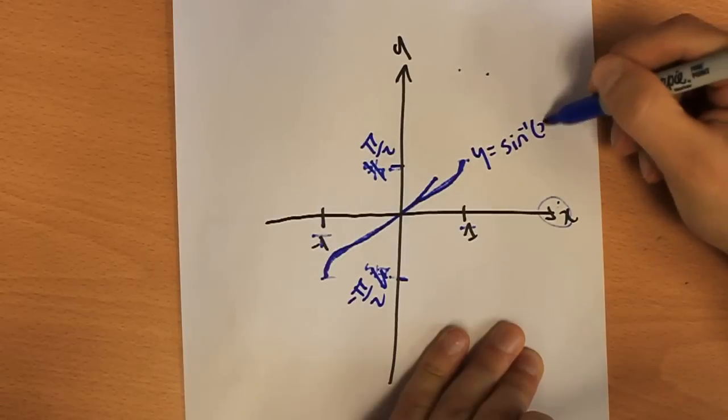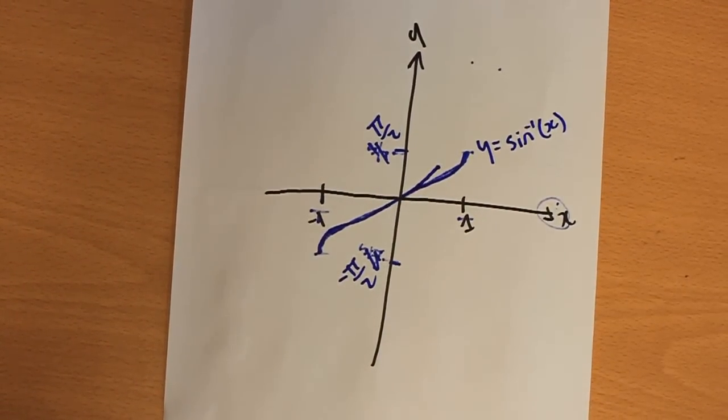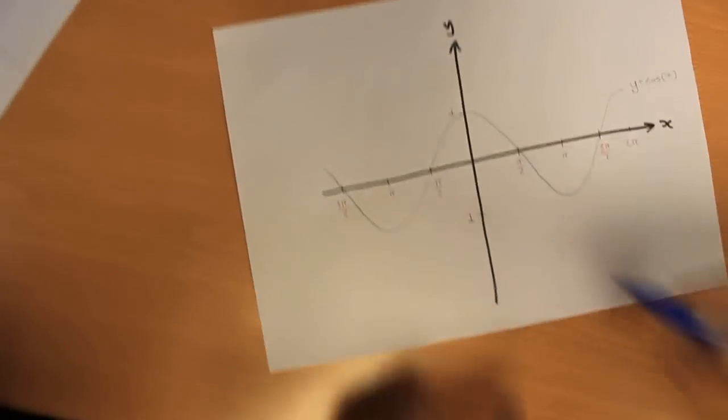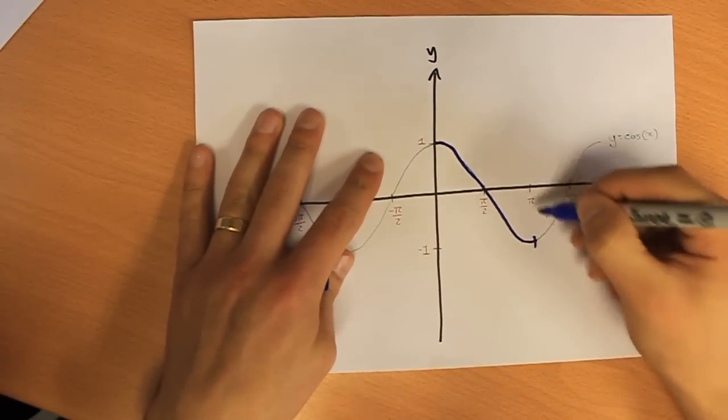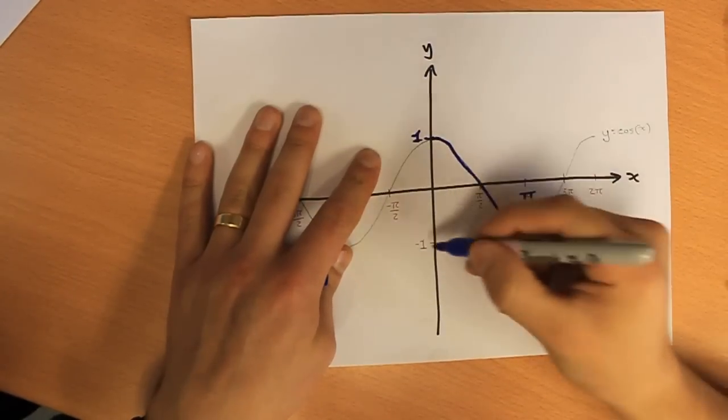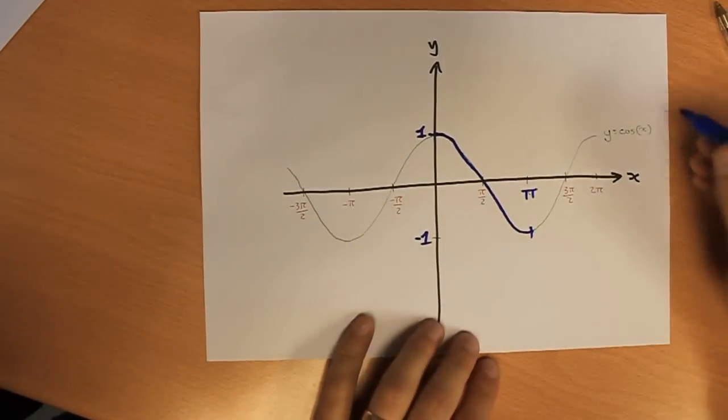And it goes from pi over 2 to minus pi over 2. This graph is y equals sine to minus 1 of x. Let's look at cos to minus 1 and tan to minus 1. With cosine x, we're going to restrict the domain to the principal domain and we get it going from 0 to pi this time. Remember it goes up to 1 and down to minus 1.